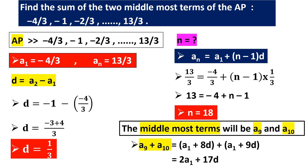When we want to find the sum of two middlemost terms, we must know the value of n — how many terms are there in the AP. For that, we use the nth term formula to find n, and after that we can easily find the middlemost terms. Let us move on to the next question.